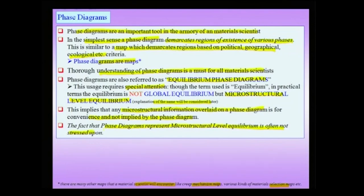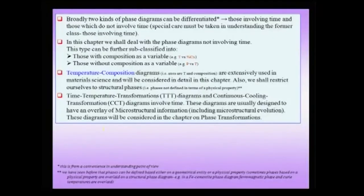This is a very important thing to note, because often textbooks will start with the assumption that you understand that these are micro-structural level equilibrium diagrams and there will be no further mention of the fact that these are not a truly global representation of global equilibrium. Additionally, strictly speaking, there is no micro-structural information in the phase diagram itself — this has been overlaid on the phase diagram to make it more useful.